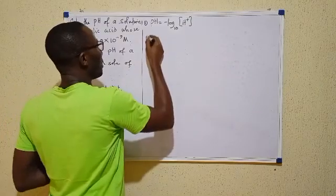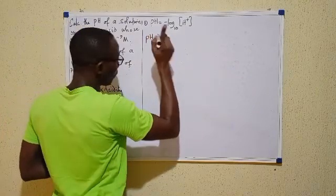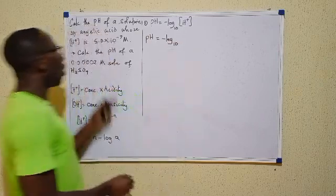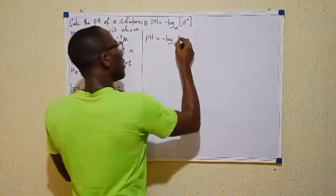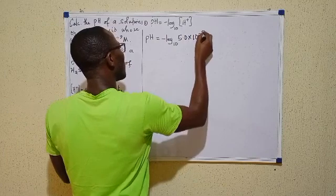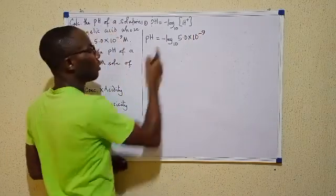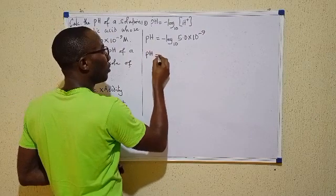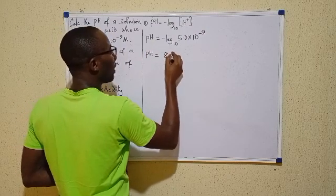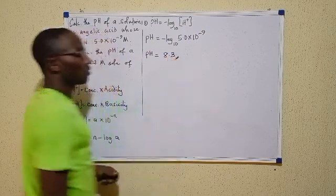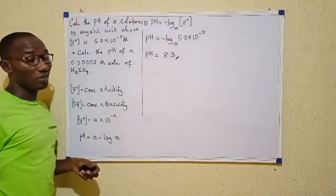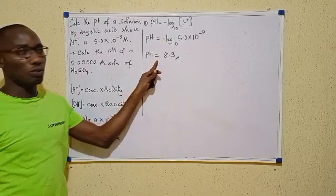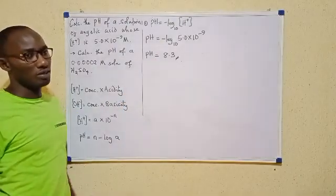So it means that I could proceed by saying pH, that's for question one, is the negative logarithm to base 10 of which value now? 5.0 times 10 raised to the power minus 9. You do this on your calculator, you get pH equals 8.3. So 8.3 is our answer, 8.301, but 8.3 is just fine. So this is the solution to question one. Very easy.